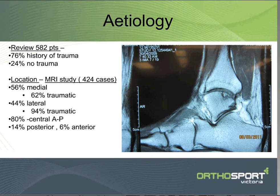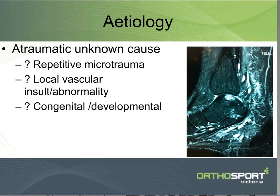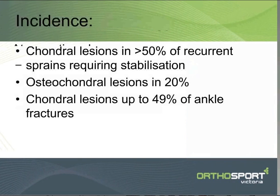And most of them are in the central third. With the atraumatic ones, we're really not sure why they occur — whether it's related to local vascular abnormalities and things like that. The traumatic ones are pretty obvious: you fall and you make a hole in the bone.